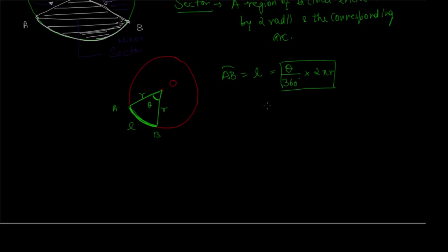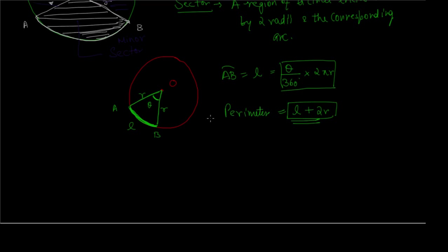If you want to find the perimeter of the sector, it includes the arc length plus the two linear radii. So the perimeter of the sector = L + 2R, where L is the arc length (θ/360) × 2πR.